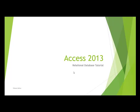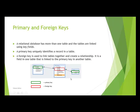To start off we will look at the definitions of a relational database, primary key, and foreign key. A relational database has more than one table and the tables are linked together using key fields. As you can see in this image, we have three different tables linked together using fields known as primary keys and foreign keys.